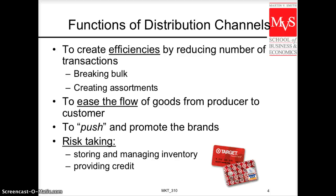What else do these distribution channels do for us? They create efficiencies by reducing the number of transactions. They create assortments by screening suppliers and manufacturers and presenting a small portfolio of products. They help brands push products by presenting them to consumers. They also take on risk by holding large volumes of inventory from the manufacturer. And they even give us credit — think of store credit cards like Target's — anticipating that cash flow to manufacturers while we pay when our credit card is due.